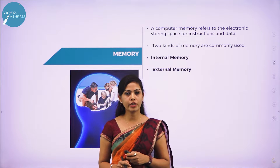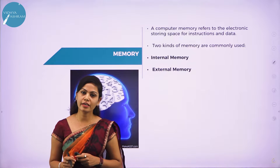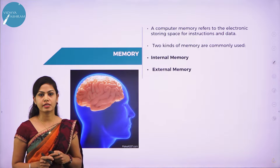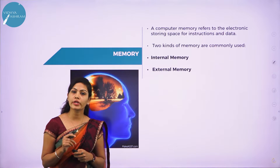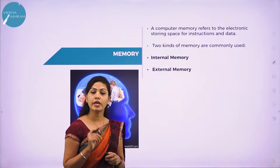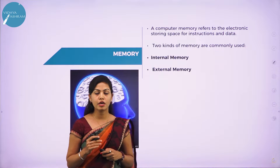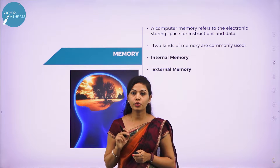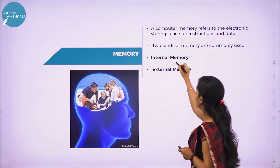In today's session, I am going to discuss about computer memory. A memory is just like a human brain. It is used to store data or instructions. Computer memory is the storage space in the computer — a device used to store data or programs on a temporary or permanent basis for use in an electronic digital computer. There are two types of memory: internal memory and external memory.